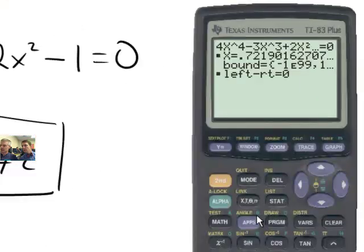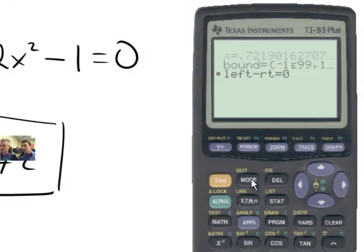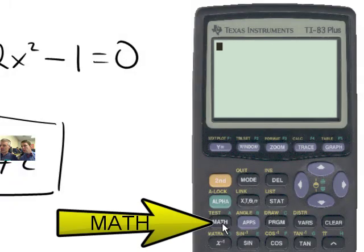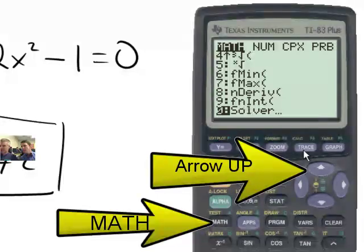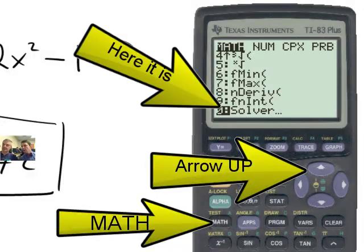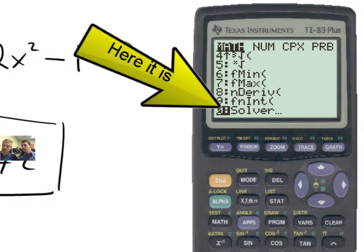Now, reminder, how do you get to the solver on your calculator? Let me kind of quit out of this. Where's the solver? Again, you push the math button. You arrow up and you see right here the 0. That's it. Cool. That's how you do it.